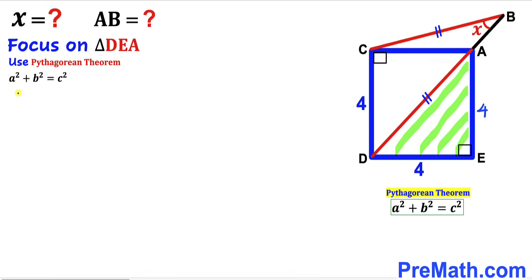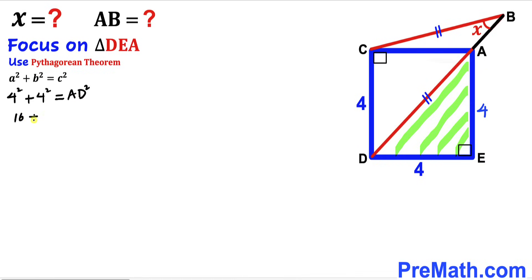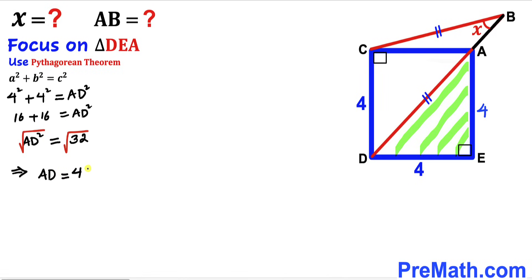Filling in the Pythagorean theorem: 4² + 4² = AD². Simplifying, 16 + 16 = AD², so AD² = 32. Taking the square root of both sides, AD = 4√2 units.